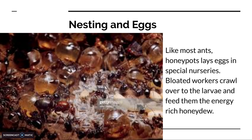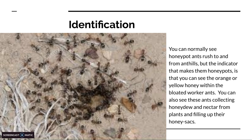Nesting and eggs: like most ants, honeypots lay eggs in special nurseries. Bloated workers crawl over to the larvae and feed them with the energy-rich honeydew, so the ants will grow faster and can be more active for longer, because honeydew is basically all sugar — plant nectar.